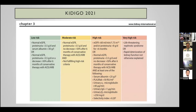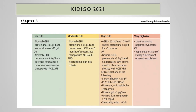According to KDIGO, patients are classified as low, moderate, high, or very high risk. Low risk: normal eGFR with proteinuria less than 3.5 grams per day (non-nephrotic). Moderate: normal eGFR but proteinuria between 4 and 8 grams per day. High risk: declining eGFR with proteinuria over 8 grams per day. Very high risk: life-threatening nephrotic syndrome. Essentially, risk increases with worsening kidney function and proteinuria.